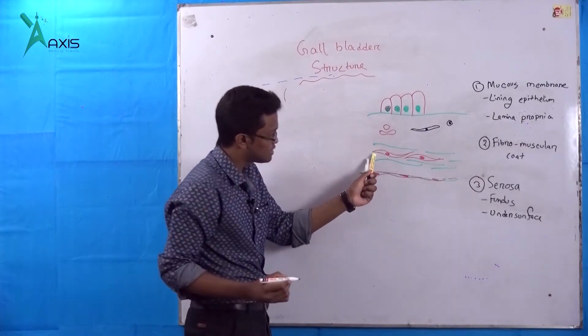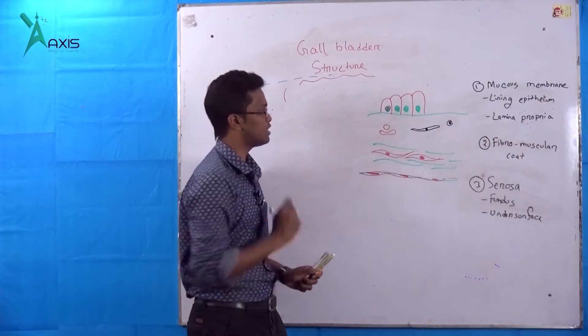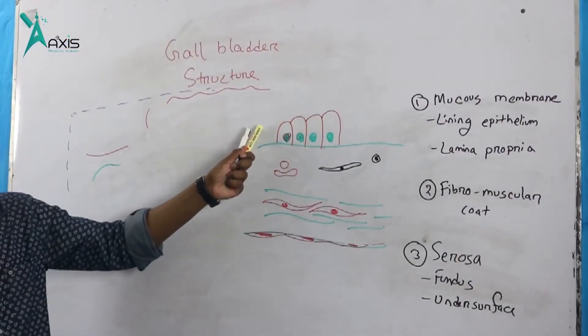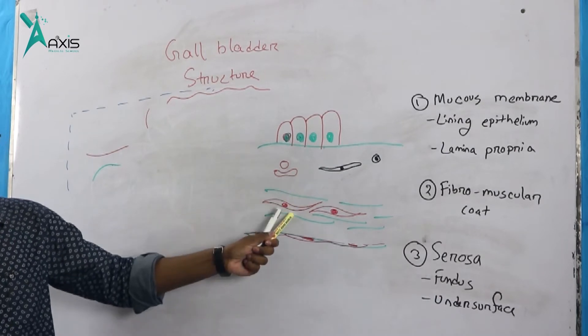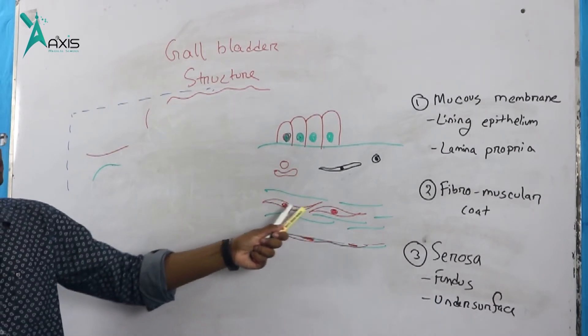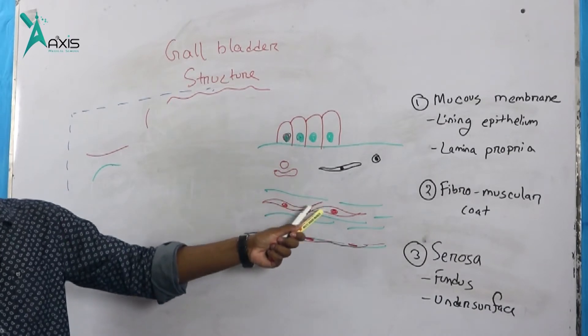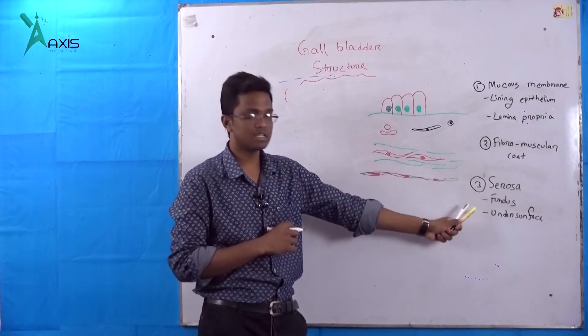The circular muscles are spindle cells with rounded nucleus. So gallbladder has simple columnar epithelium and basement membrane, lamina propria, fibromuscular layer containing smooth muscle and collagen fibers, and serosa in the fundus and undersurface.